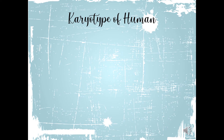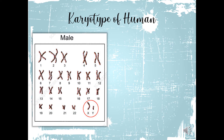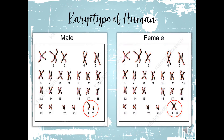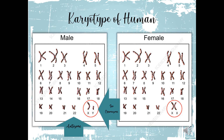Let us talk about the karyotype of humans. We have here a karyotype of a male as well as the female's karyotype. Always remember that humans have 23 pairs of chromosomes for a total of 46 chromosomes. We have 22 pairs of autosomes, so from 1 to 22, those are called autosomes, and 1 pair of sex chromosomes. Same with the female — from 1 to 22 it is considered as autosome and 1 pair of sex chromosomes.